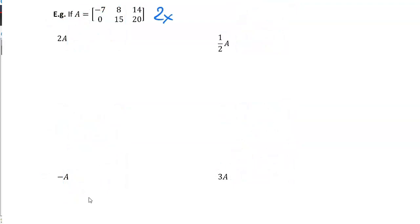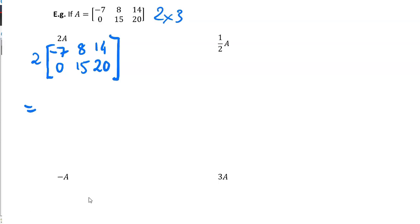Let's look at this example where we've got A as a two by three matrix. If we've got two times by that matrix A — negative seven, eight, fourteen, zero, fifteen, twenty — we multiply each and every element by that number outside the bracket. So that's negative fourteen, sixteen, twenty-eight, zero, thirty, and forty.